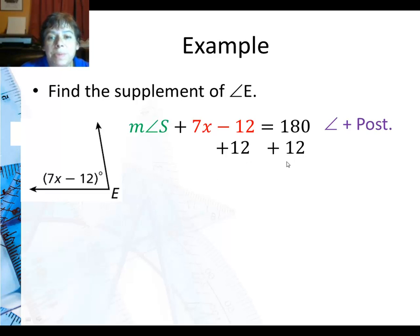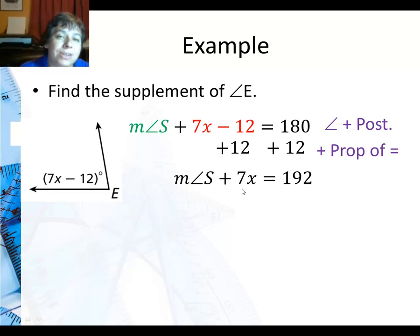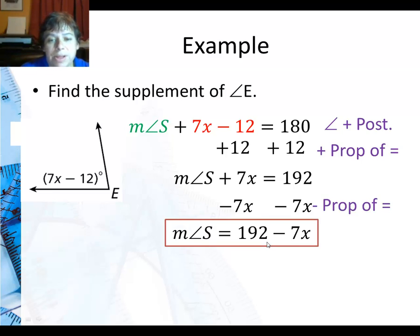Well I'm going to add 12 to both sides and that's from the addition property of equality. I get measure of angle S plus 7x is 192. Well I don't want the x over here. X is actually going to be part of the answer. So these are unusual. You're going to actually subtract 7x from both sides using the subtraction property of equality. And you get the measure of the supplement is 192 degrees minus 7x.